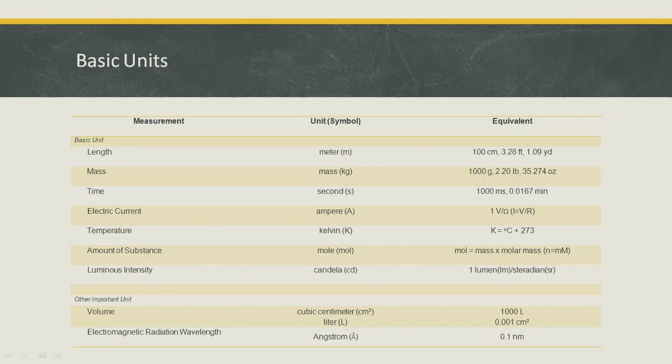And luminous intensity. In the second column we can see the unit and symbol used. In the third column are the equivalent values in other unit systems, and also the formula or expression equivalent. In the last portion of the table we can see other important units — note these are not basic units. We have volume, electromagnetic radiation wavelength, which is essential in our subject.